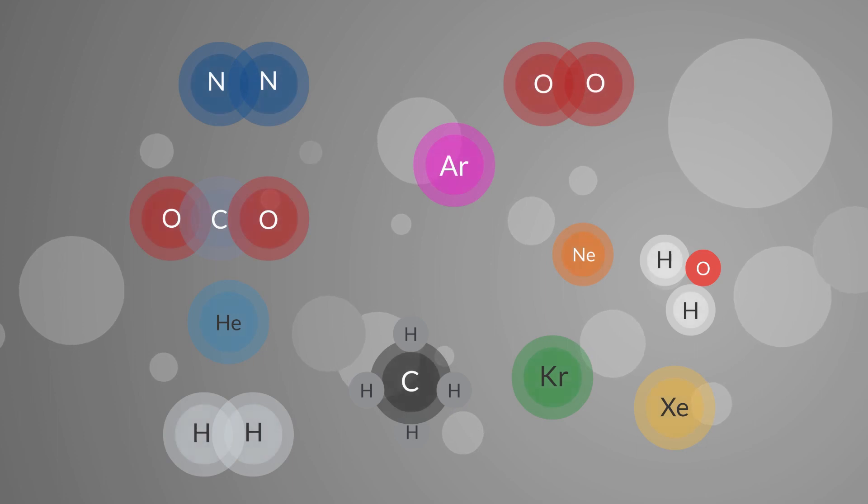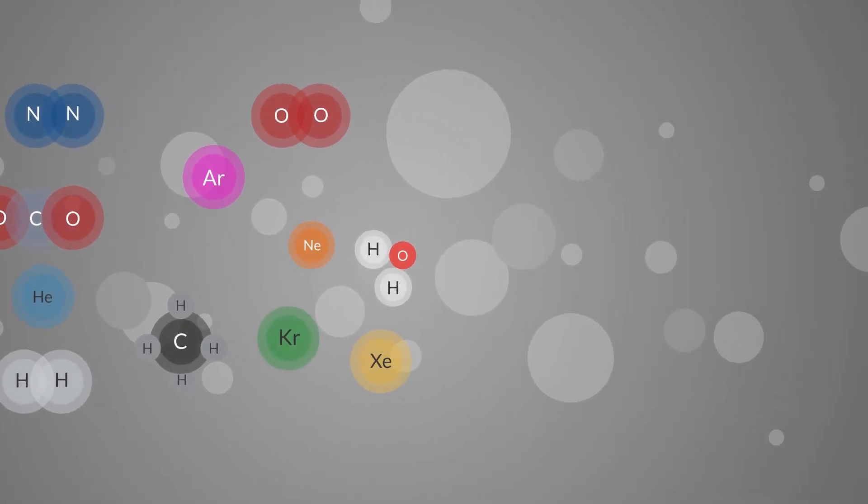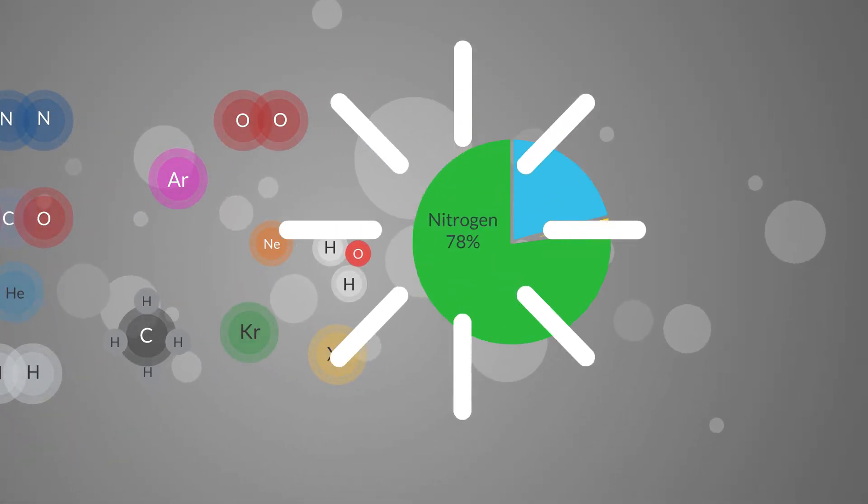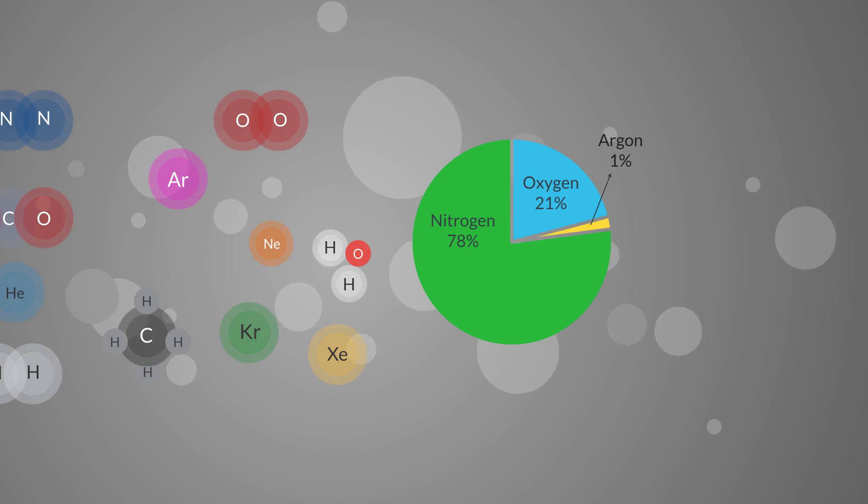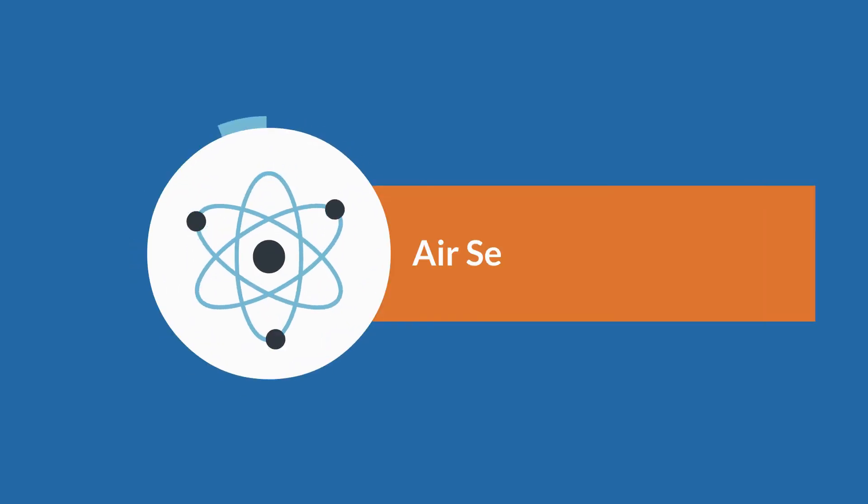Air separation works on the principle that gas turns to liquid at different temperatures. Air is made up of 78% nitrogen, 21% oxygen, 1% argon, and a number of minor constituents. Air is processed in five steps to extract these vital molecules.